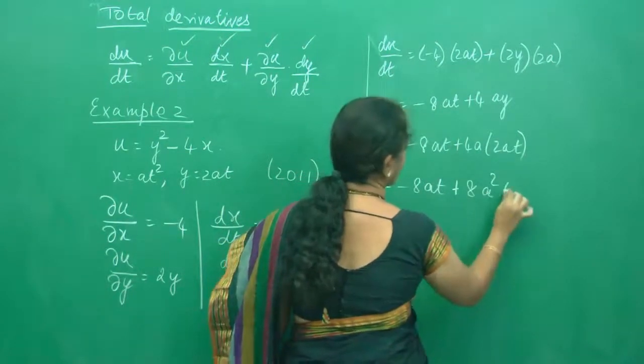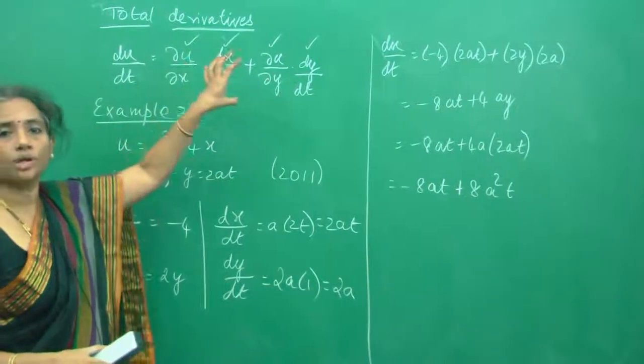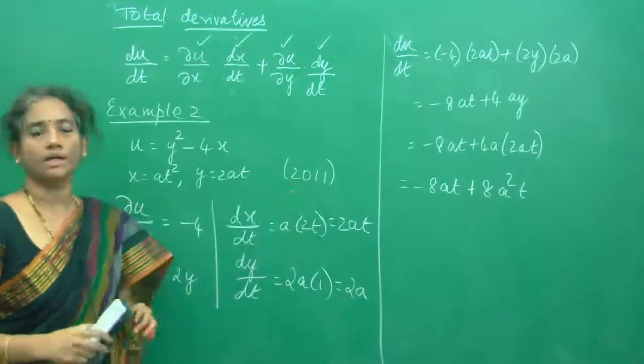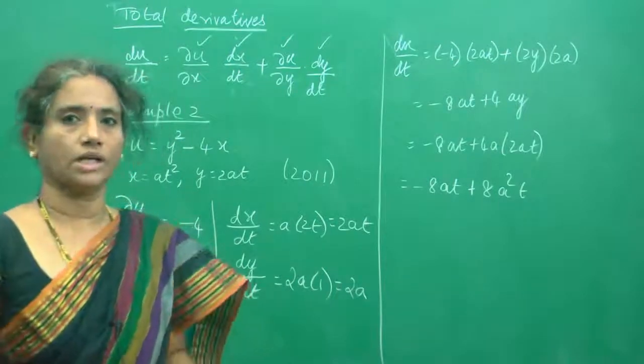So when you want to do the total derivative, do each one of them and then substitute and get the answer. Leave the answer in terms of the variable t generally.